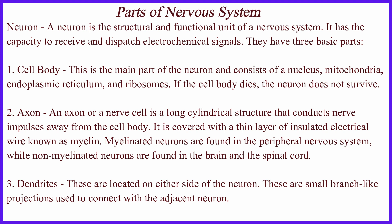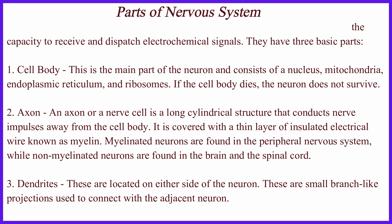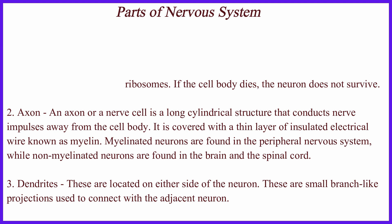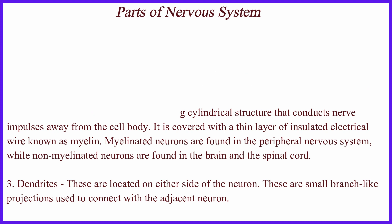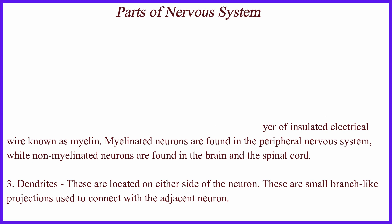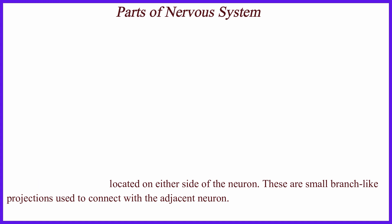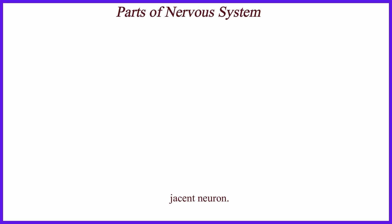An axon, or nerve fiber, is a long cylindrical structure that conducts nerve impulses away from the cell body. It is covered with a thin insulating layer known as myelin. Myelinated neurons are found in the peripheral nervous system, while non-myelinated neurons are found in the brain and the spinal cord. Dendrites are located on either side of the neuron and are small branch-like projections used to connect with the adjacent neuron.